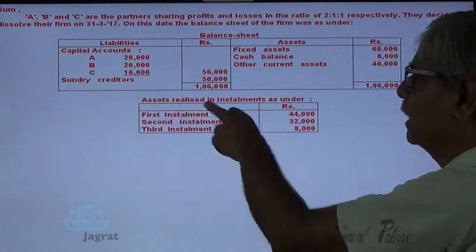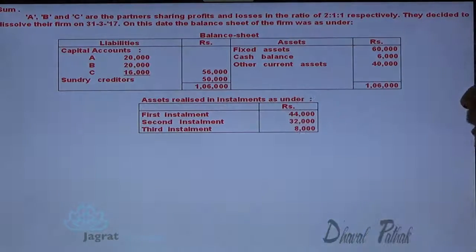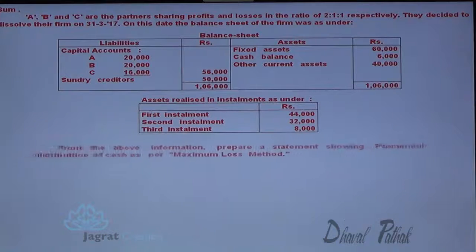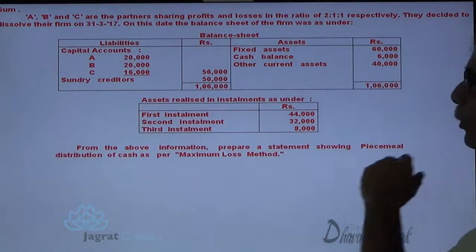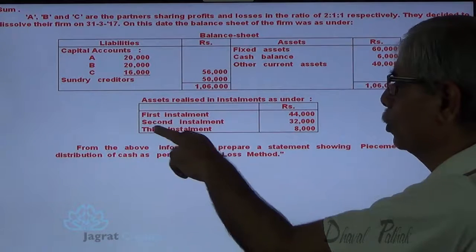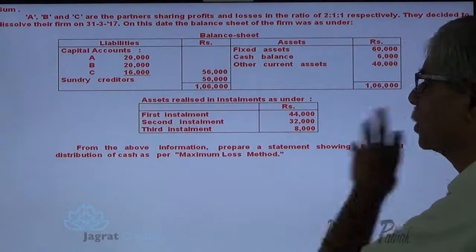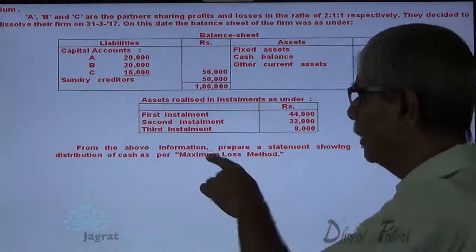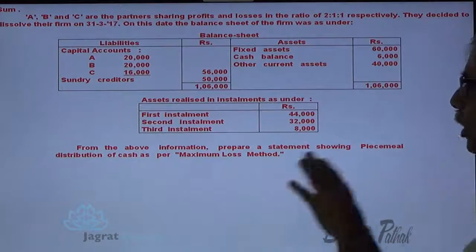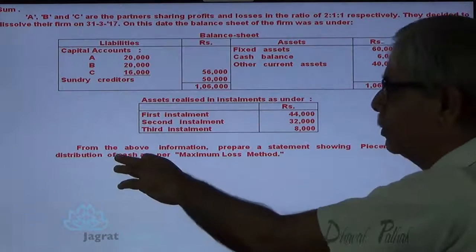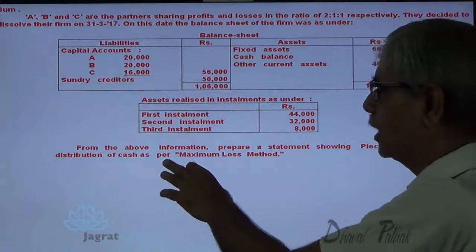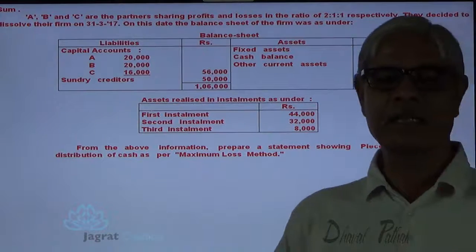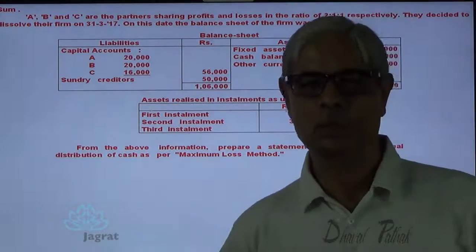Assets are realized in installments as under: first installment 44,000, second installment 32,000, third installment 8,000. From the above information, prepare a statement showing piecemeal distribution of cash as per maximum loss method. This is the sum that I intend to solve.